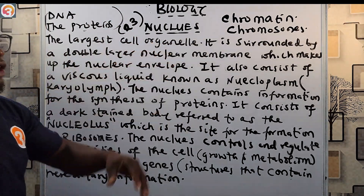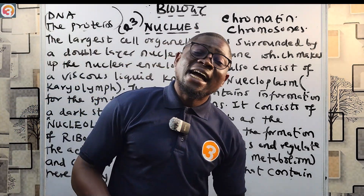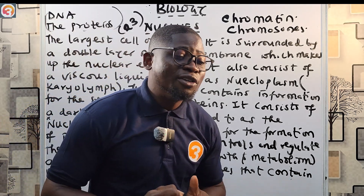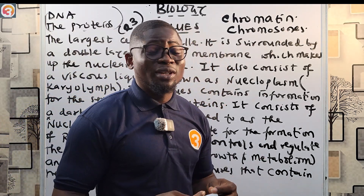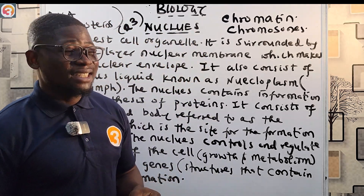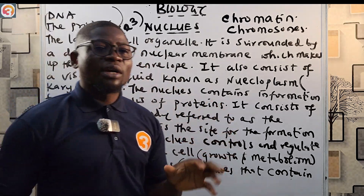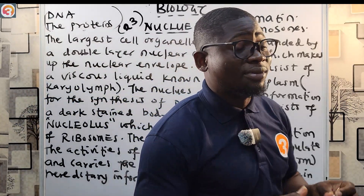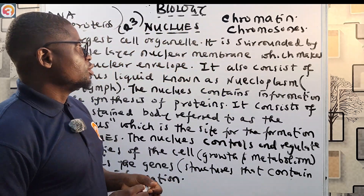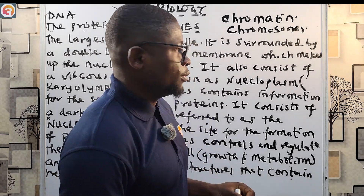The nucleus is the largest cell organelle. Among all organelles, it is the largest and it is the one we can usually observe under a light microscope — please take note of that, as it appears in past questions. The other organelles are very, very small.